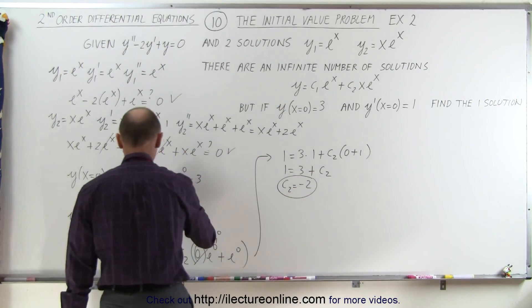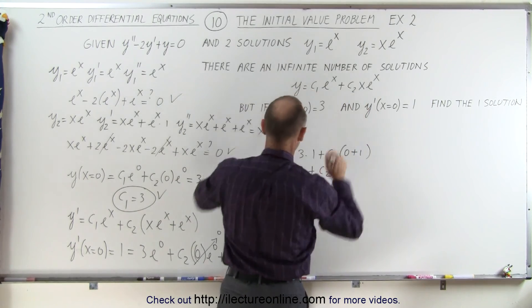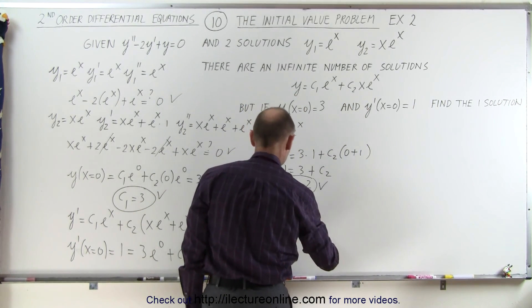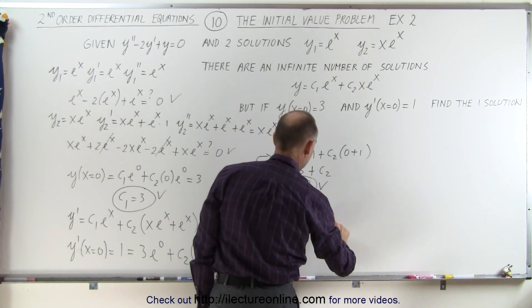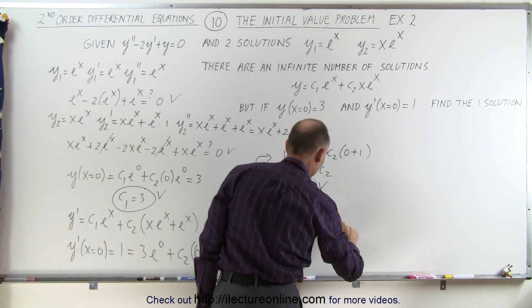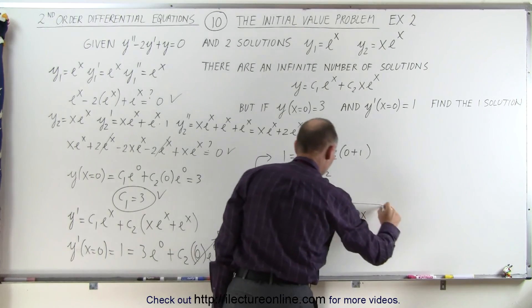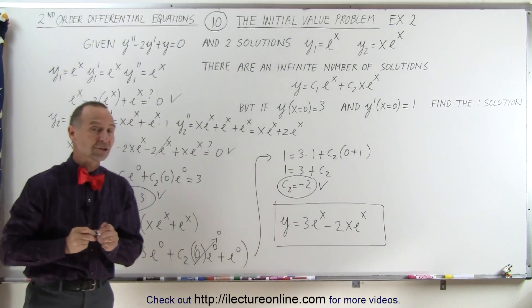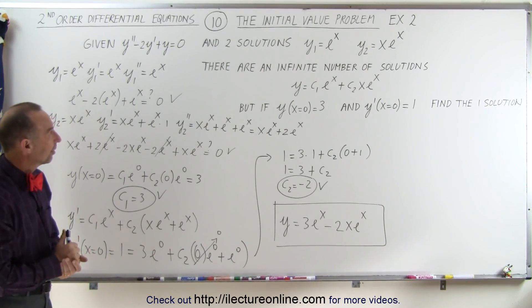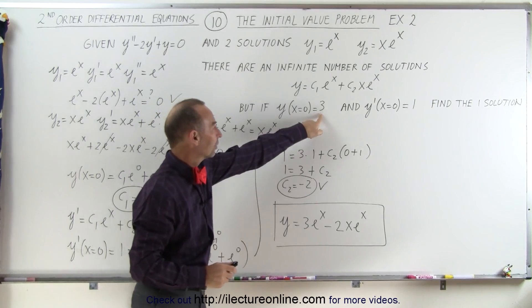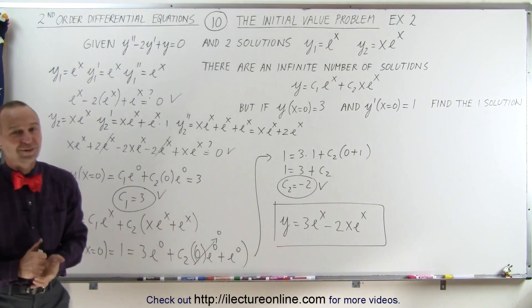Now we have c1 and c2. Plugging in those two values for our constants, our single solution is y equals 3 e to the x minus 2 x e to the x. That's our one single solution that satisfies both initial conditions y(0) equals 3 and y'(0) equals 1. That's how it's done.